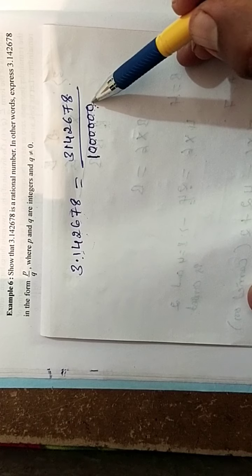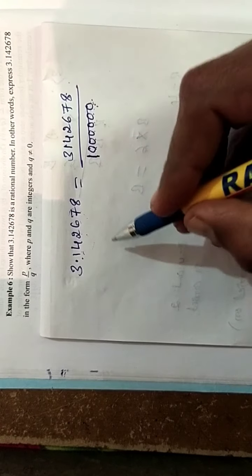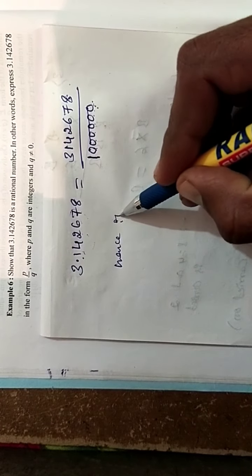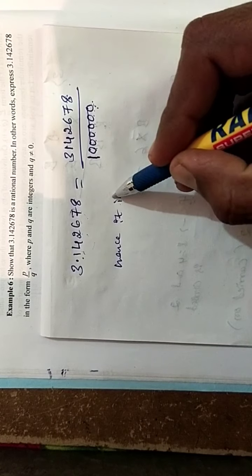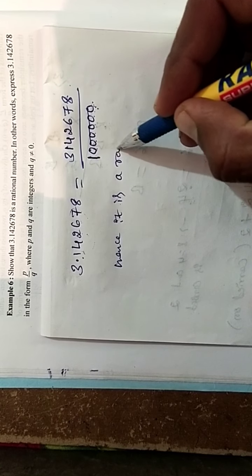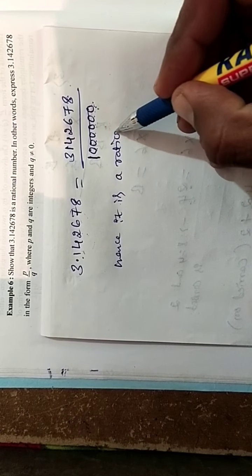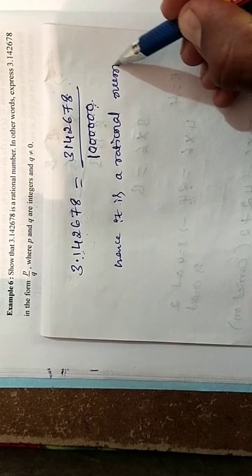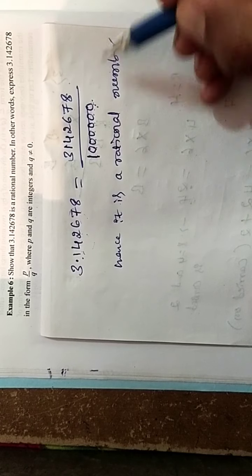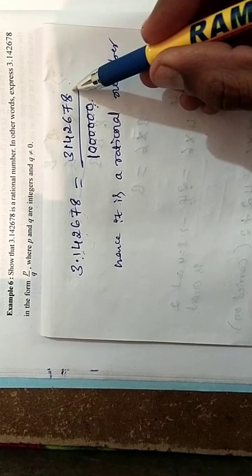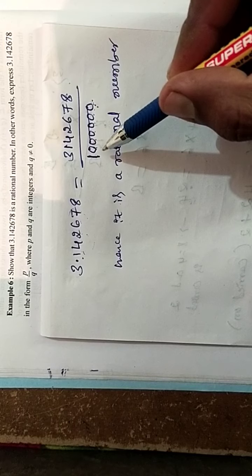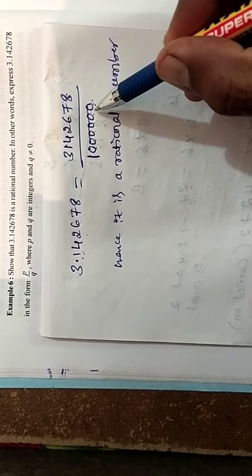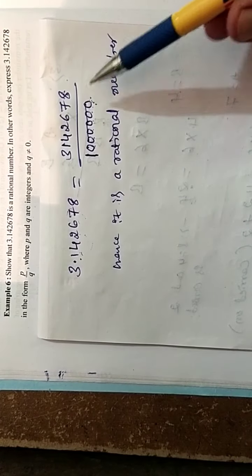Hence, it is a rational number. So 3.142678 divided by 1000000 — that is 3142678 over 1000000 — with 6 zeros after 1. It is a rational number, converted to p by q form.